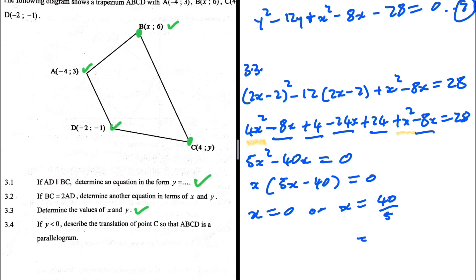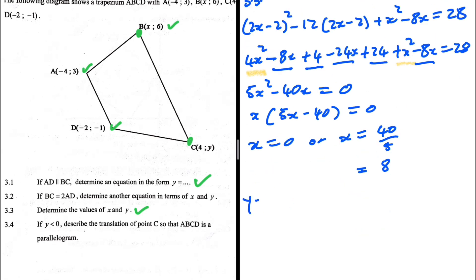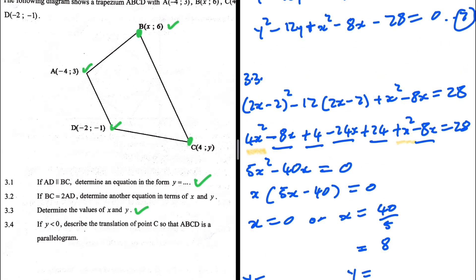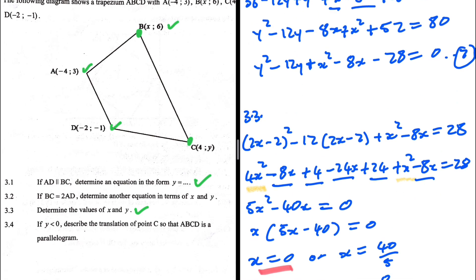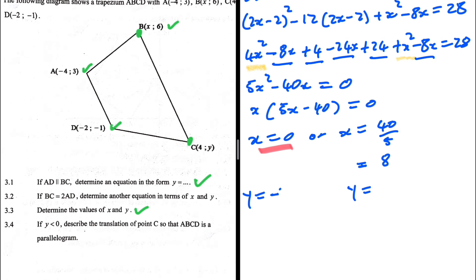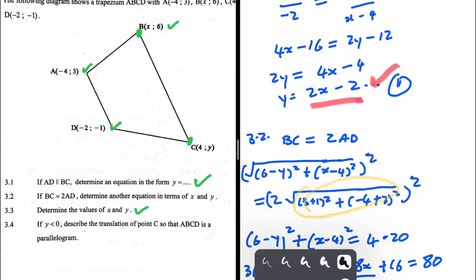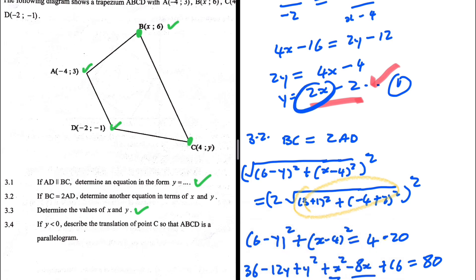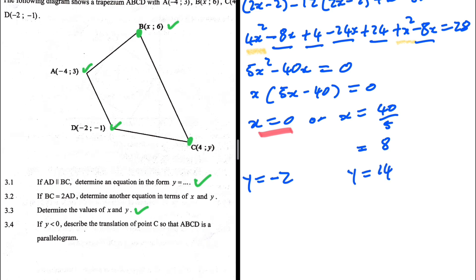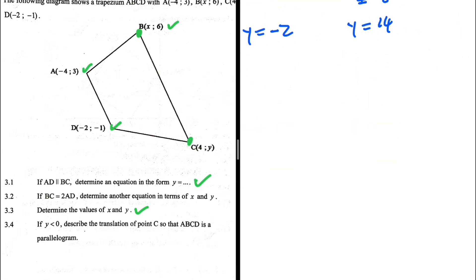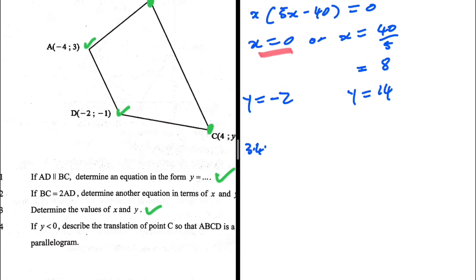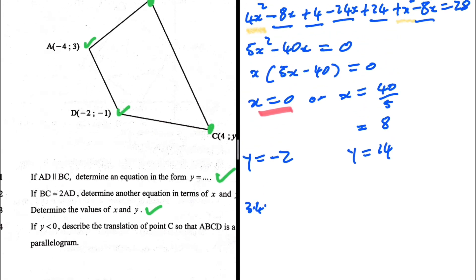So either x = 0 or 5x = 40, giving x = 8. We have two values of x, therefore two values of y. Substituting x = 0 into y = 2x − 2: y = −2. Substituting x = 8: y = 16 − 2 = 14. So the possible values are x = 0, y = −2 and x = 8, y = 14. That is 3.3.